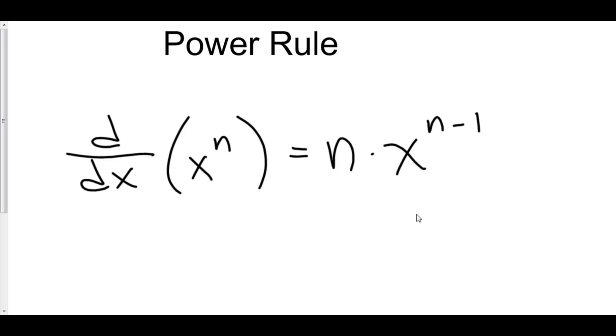Now here, n can be negative, n can be a fraction, n can be irrational, n can be any real number. So what we do when we take the derivative of x to any power is you take the exponent, you move it in front, and then you subtract 1 from the exponent.